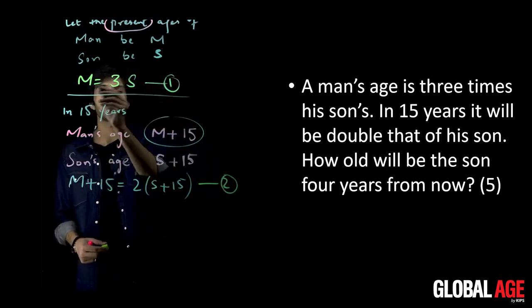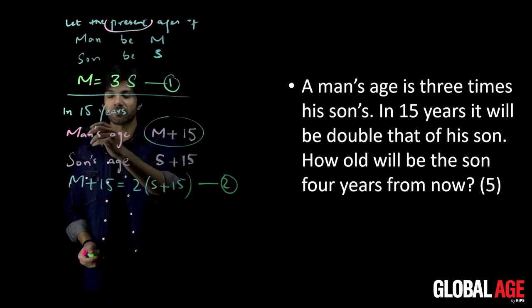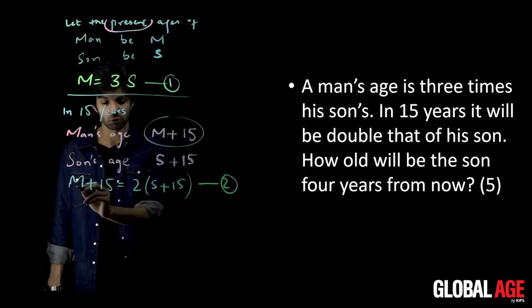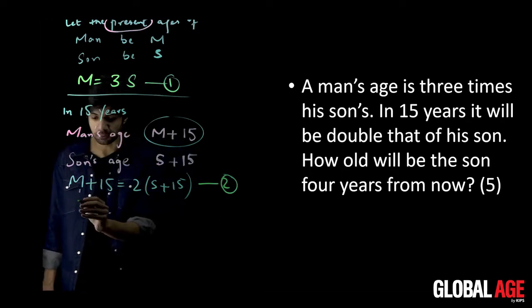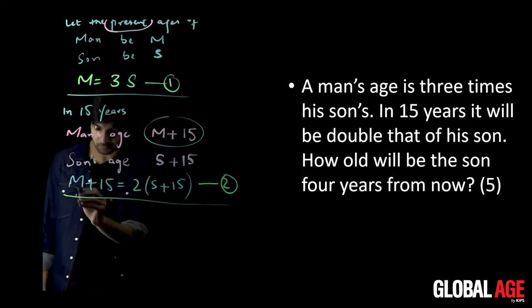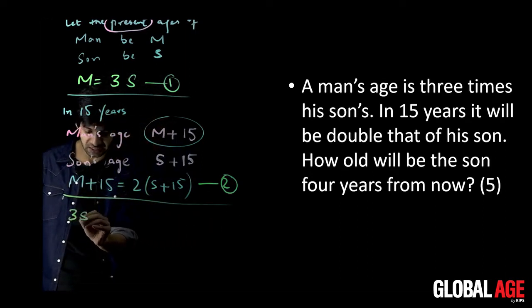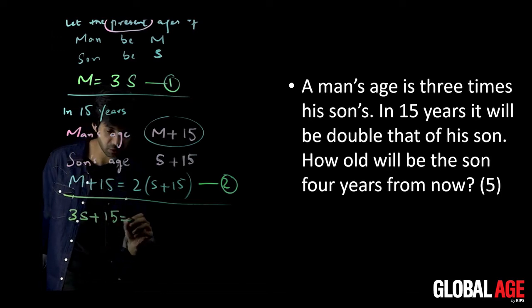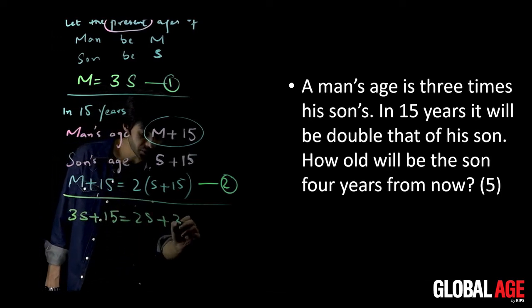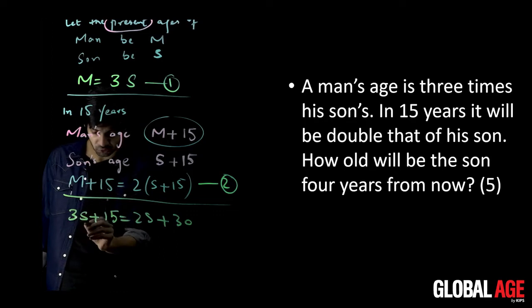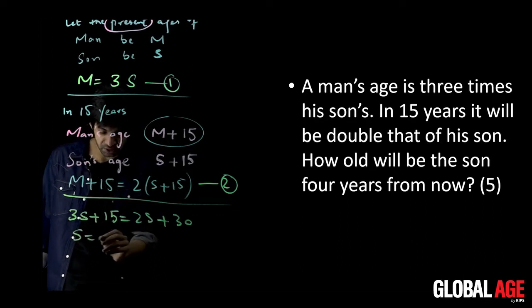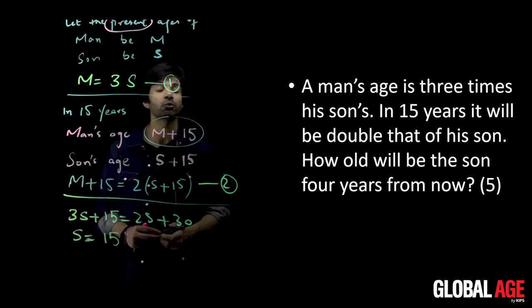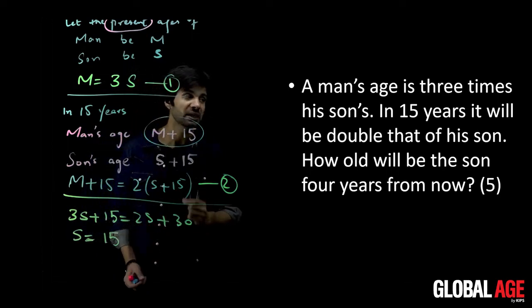Now solve those equations. M is equal to 3S, so let's put this in equation number 2. Putting M is equal to 3S in equation number 2, you have 3S plus 15 is equal to 2S plus 30. So 3S minus 2S is S, and 30 minus 15 is 15. So S is equal to 15.